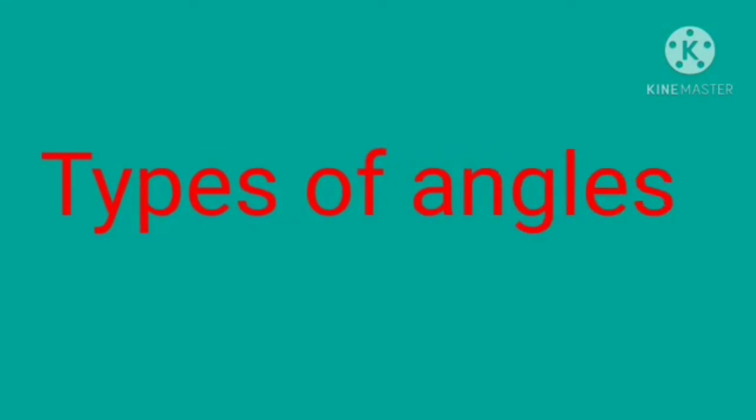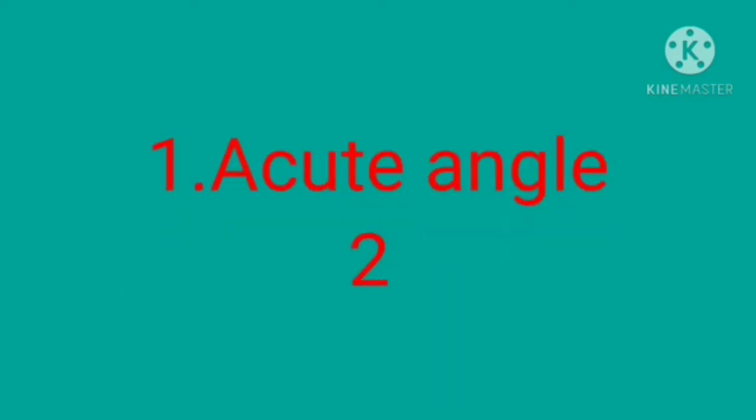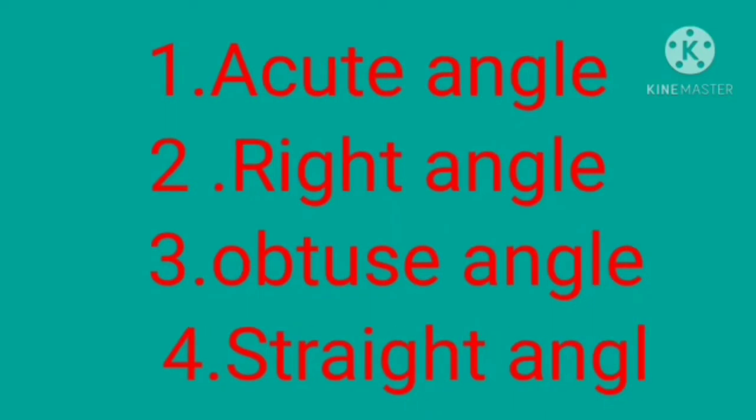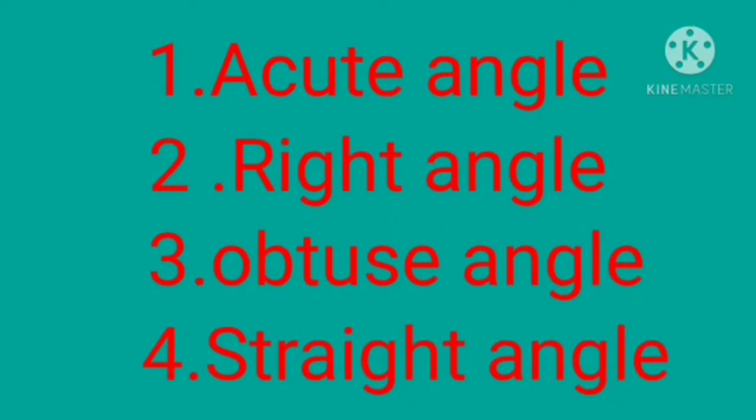Next, types of angles. There are mainly 4 types in angles. The first one is acute angle. The second one is right angle. Third one is obtuse angle. And fourth one is straight angle.